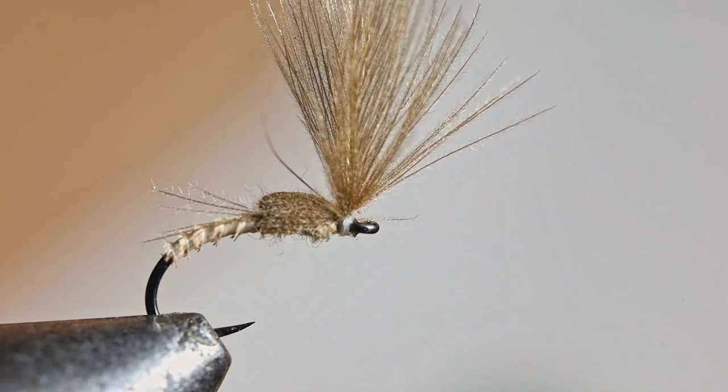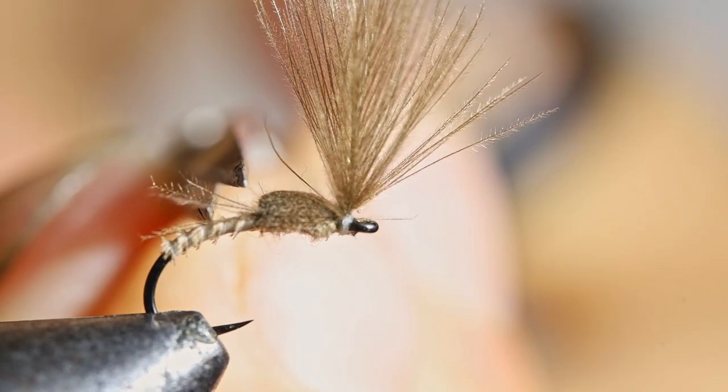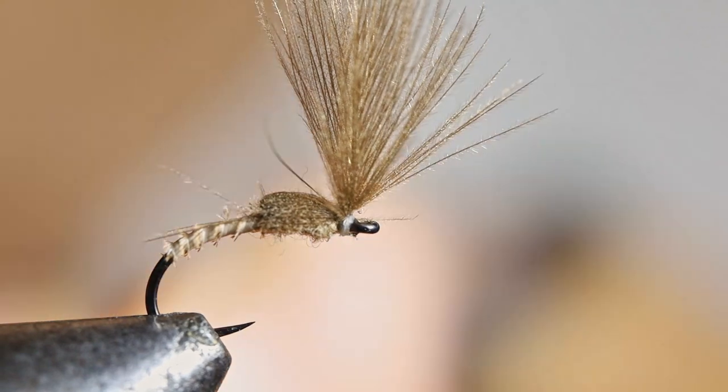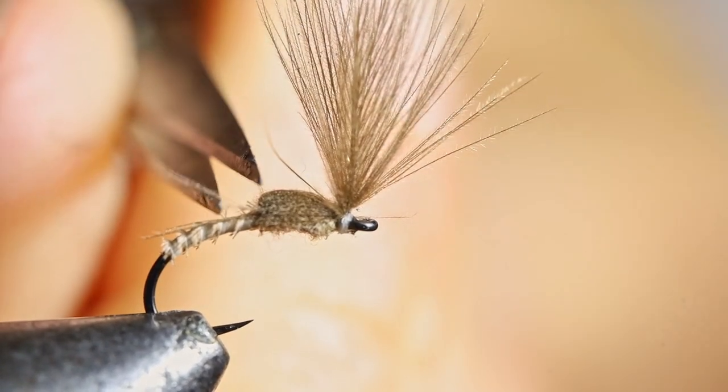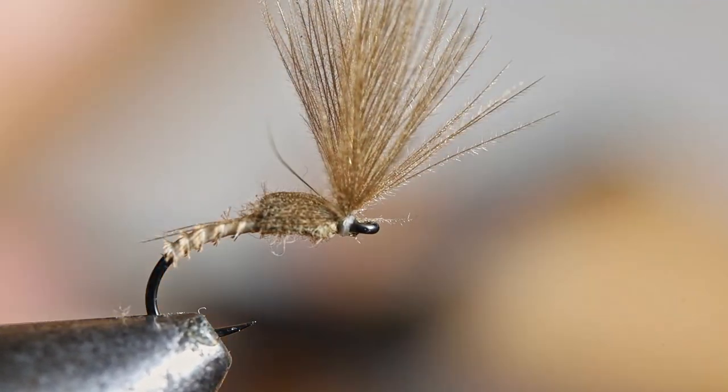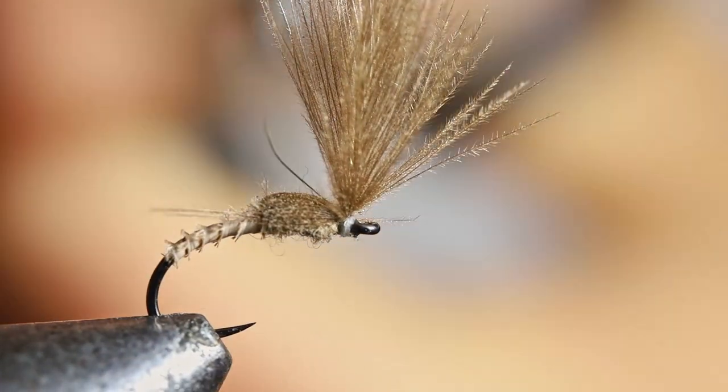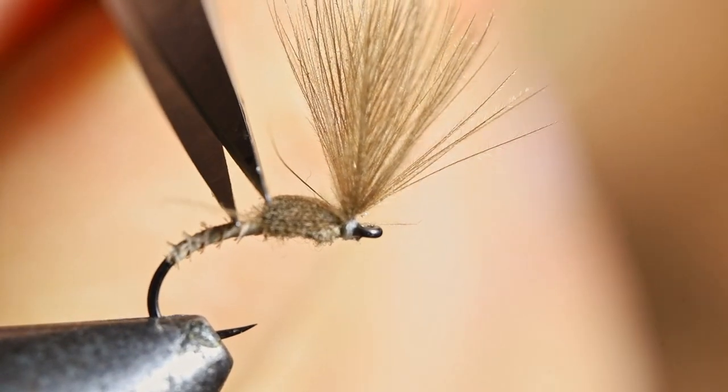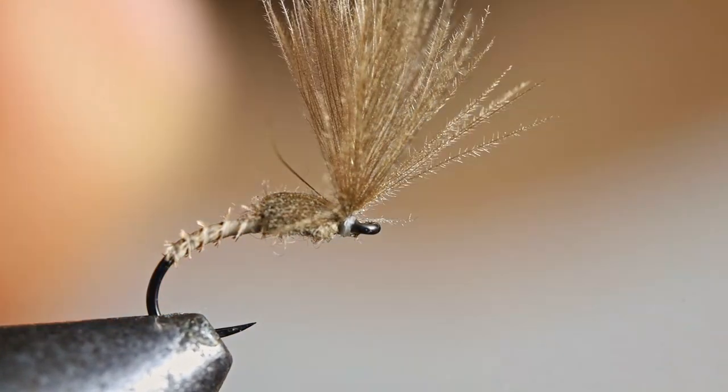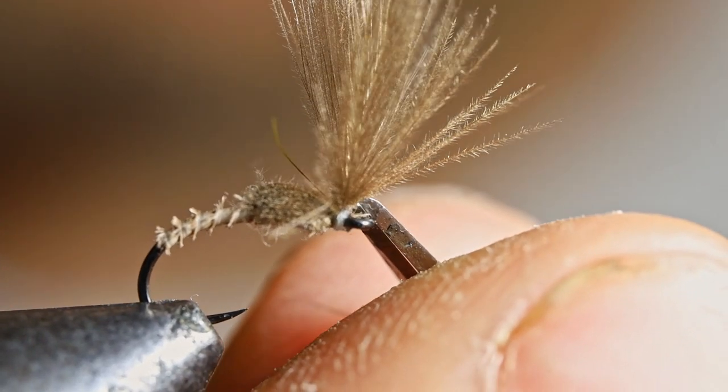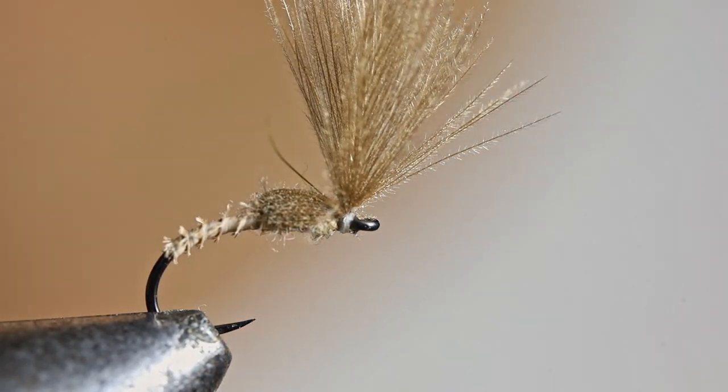If you want to neaten up your fly, it's not strictly necessary. But you can just, there will usually be a couple of pieces of CDC sticking out the back of the thorax here. And I like to cut those off. Because I can be a perfectionist at times. But the fish really don't care about stuff like that. I see there's a piece just there at the eye.